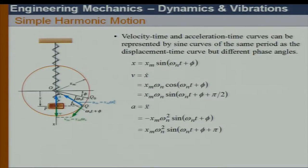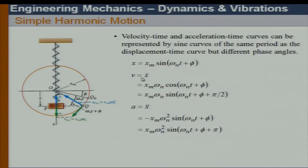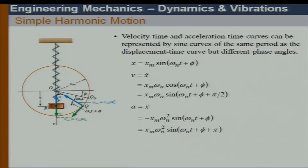The solution is x = x_m · sin(omega_n · t + phi). The velocity is x dot, which is dx/dt, with maximum amplitude x_m · omega_n. The maximum acceleration is x_m · omega_n². So all I need to remember are these three parameters.